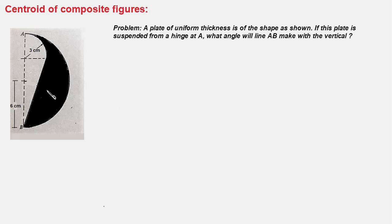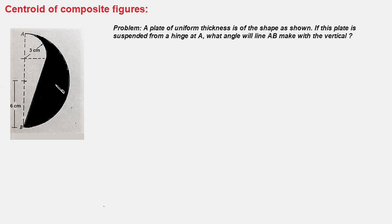The plate is suspended from point A and we have to find the angle the line AB will make with the vertical when this plate is in equilibrium condition. In equilibrium, the center of gravity of this plate will be vertically under point A, and therefore this line AB will shift towards the left. Since the plate is uniform, the center of gravity and the centroid of this area will coincide.